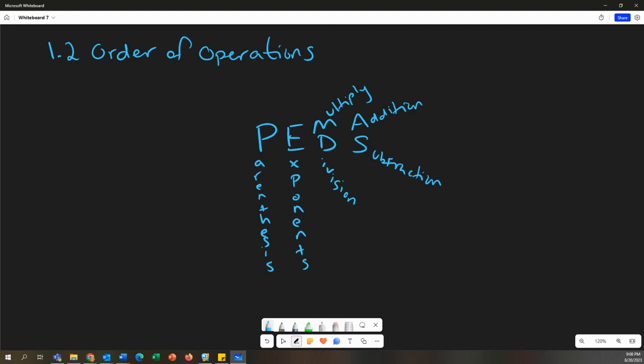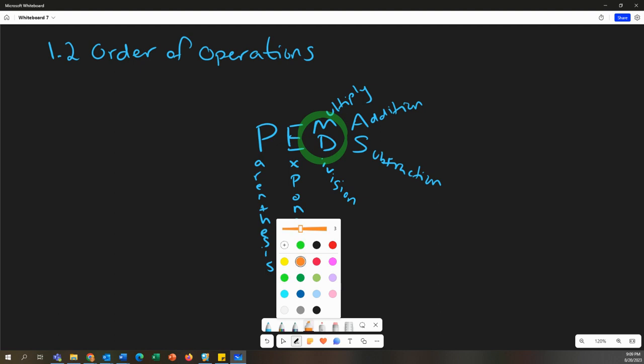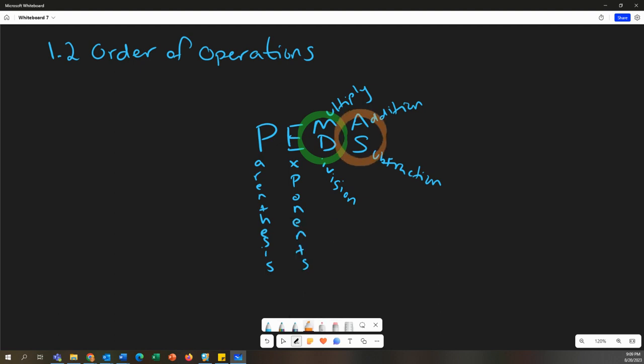The reason I write it on top of each other is because once you get to that step of multiplying and dividing, once I do parentheses and exponents, I just go from left to right. Once I get through with multiplying and dividing and I'm at the last one, which is adding and subtracting, I just go from left to right and go in order of what's left. So let's look at a couple examples together.